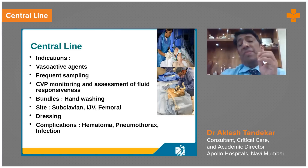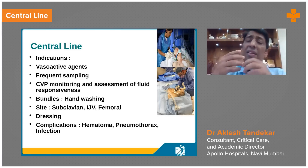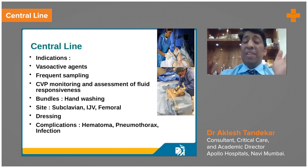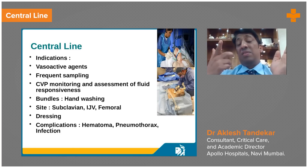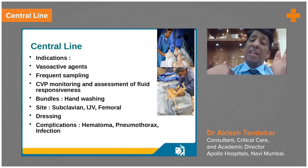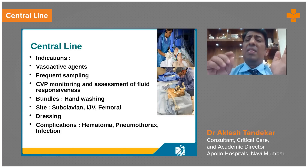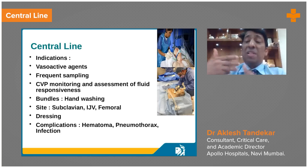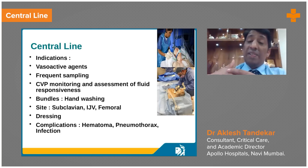If the patient has a femoral line and the aerosol generation phase has passed, we can switch over to either subclavian or internal jugular vein. Subclavian line has less chance of infection, but pneumothorax rates are presumed to be higher with subclavian.